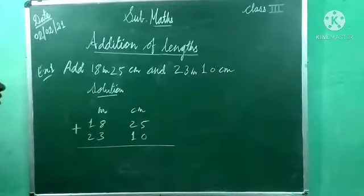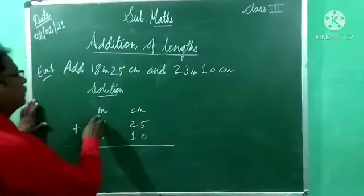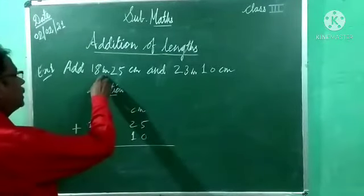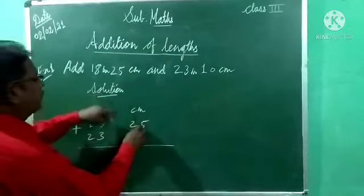So here two units of measurements are given, meter and centimeter. So make two columns, one meter and second one is centimeter. Below meter, you have to write 18, and below centimeter 25.